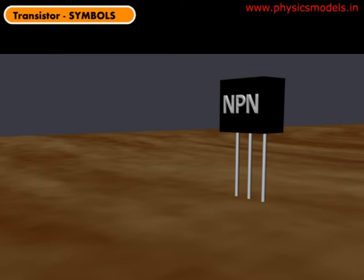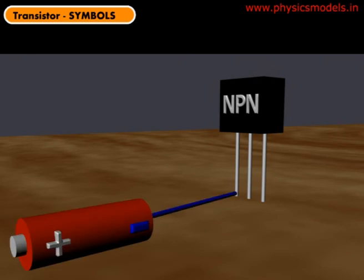A transistor is that black looking rectangle that you see in this picture with three things joined together: one N semiconductor, a P semiconductor, and another N semiconductor. Those three things are stuck together and you have three wires jetting out below. Each of those wires is connected to N, P, and N. Those wires are good conductors; it's only the black thing which is the semiconductor.